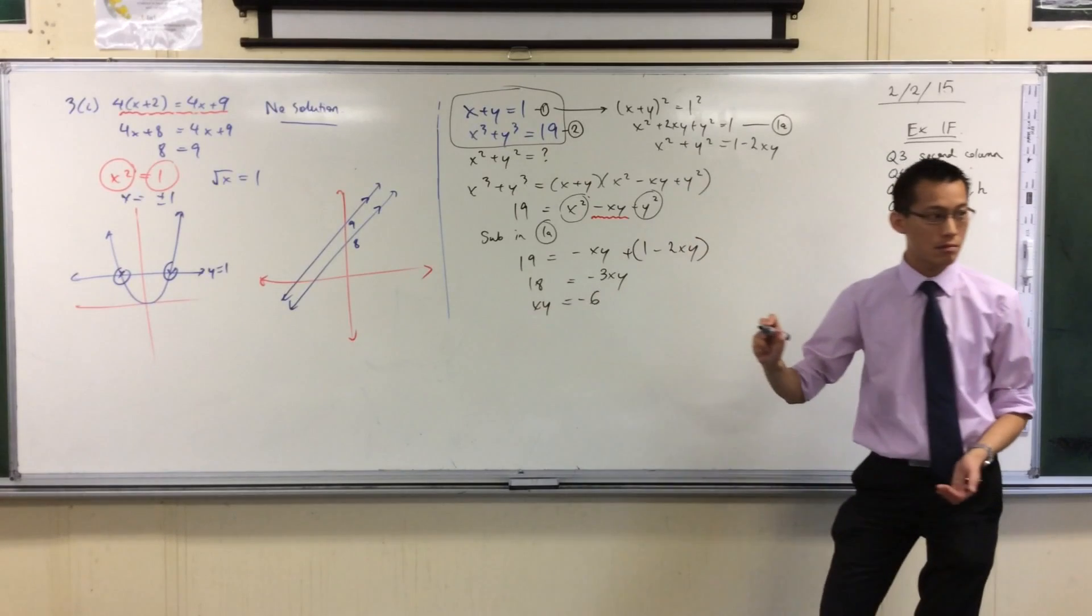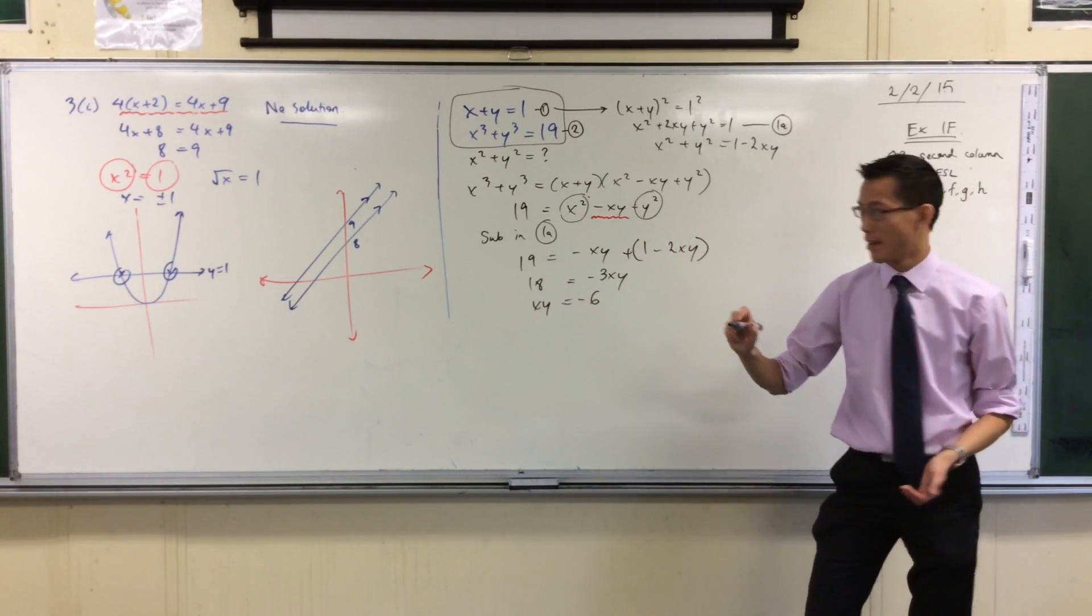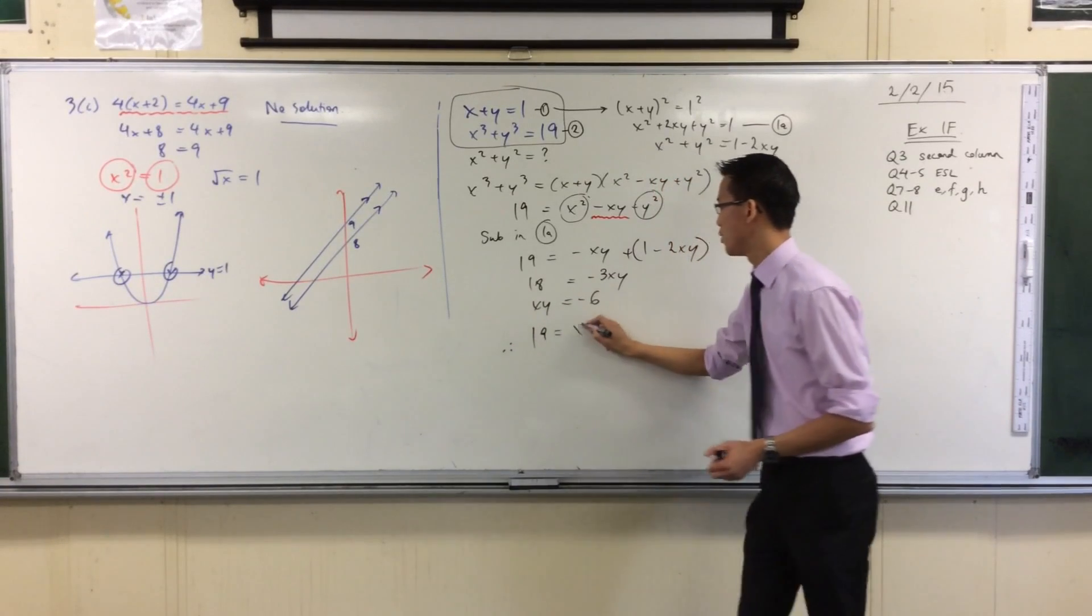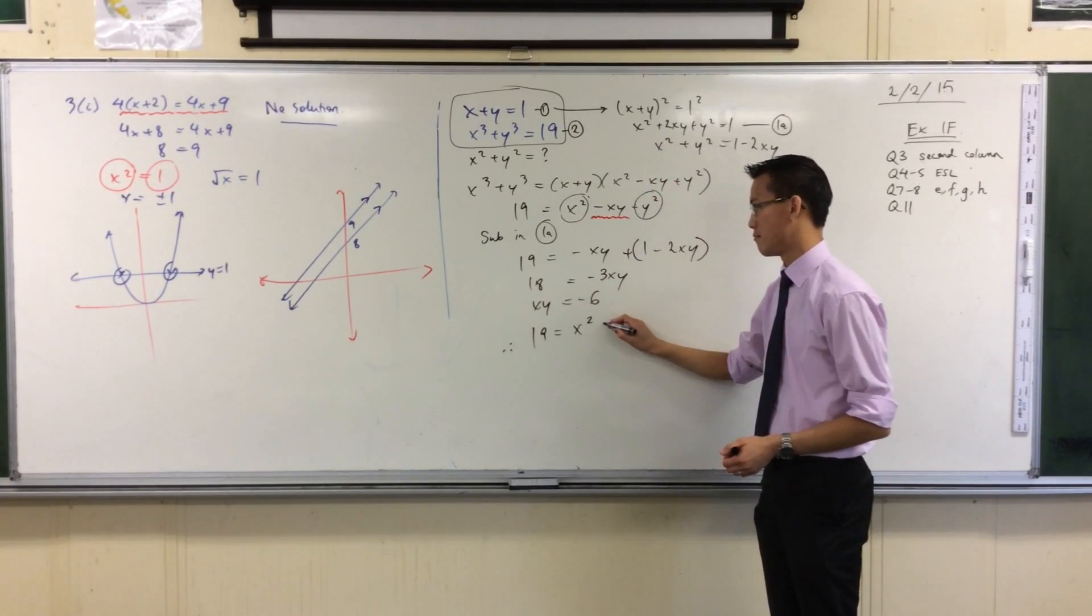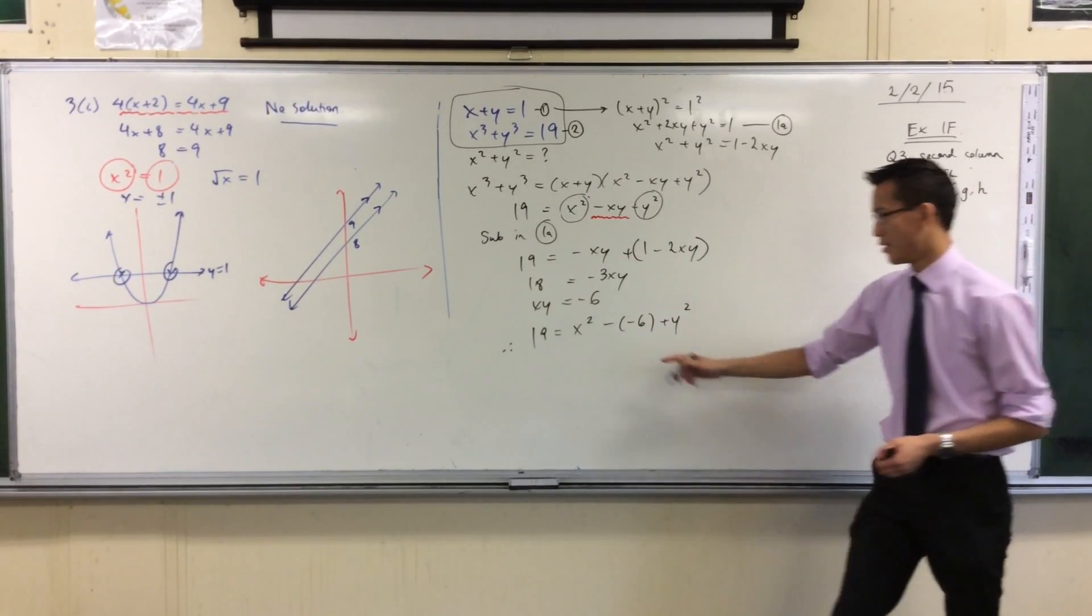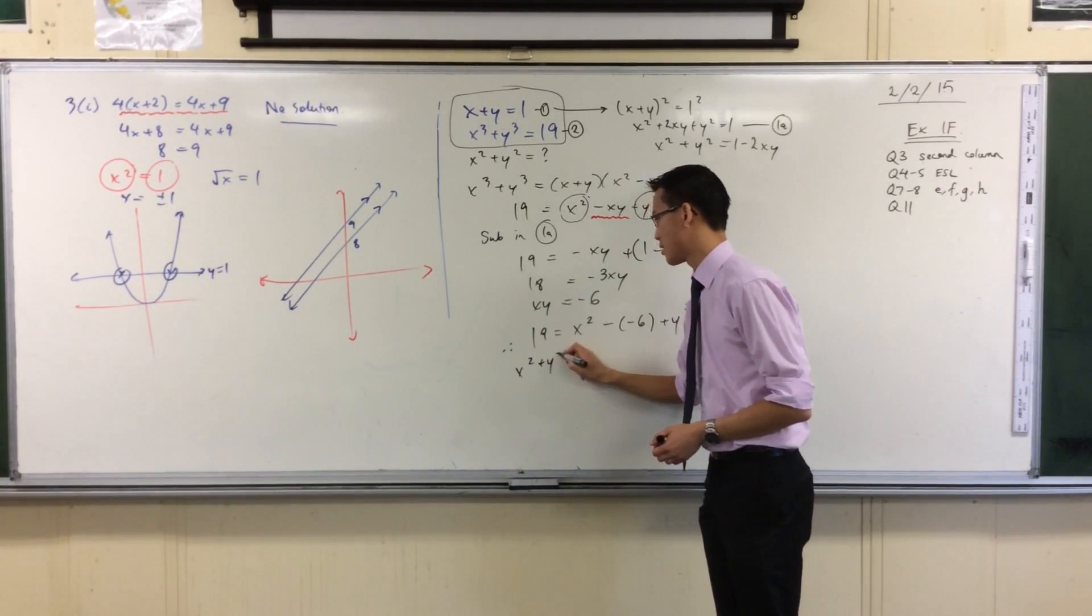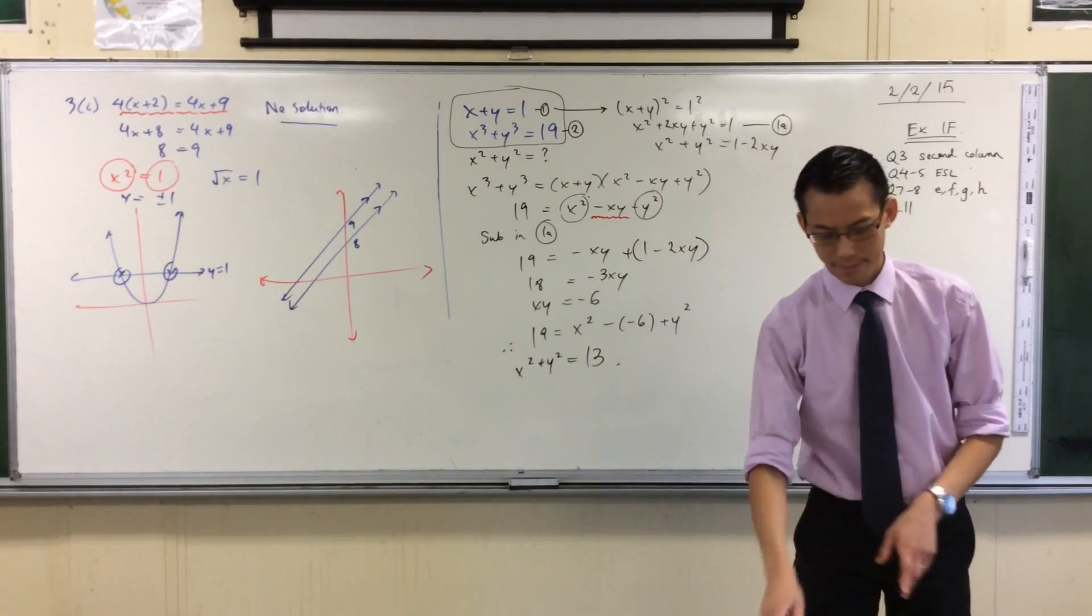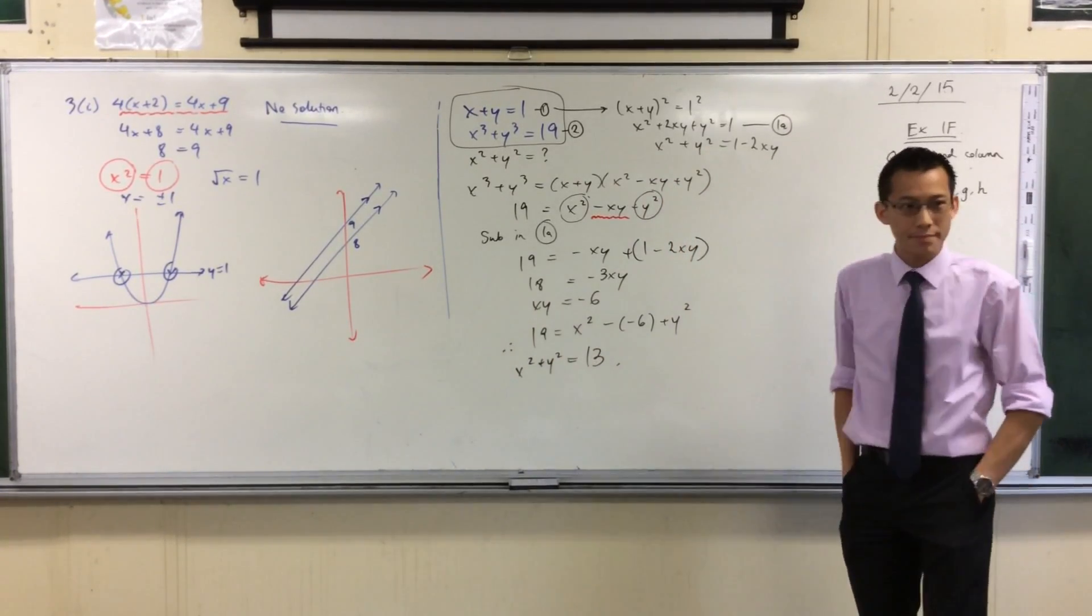Let me just simplify a little more. Negative 6. Yep. So now if I bring this back, 19 is equal to x² minus negative 6 plus y². Yep. So x², y². And if I take away the 6 from both sides, there's my bottom. So what number could you do? 13. That was 13. Cool. 13.